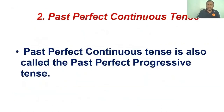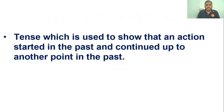Let's move to past perfect continuous tense. This is also known as the past perfect progressive tense. This tense is used to show that an action started in the past and continued up to another point in the past. Simply, it describes an action which started in the past and already stopped in the past — a past action which started earlier and stopped in the past too.